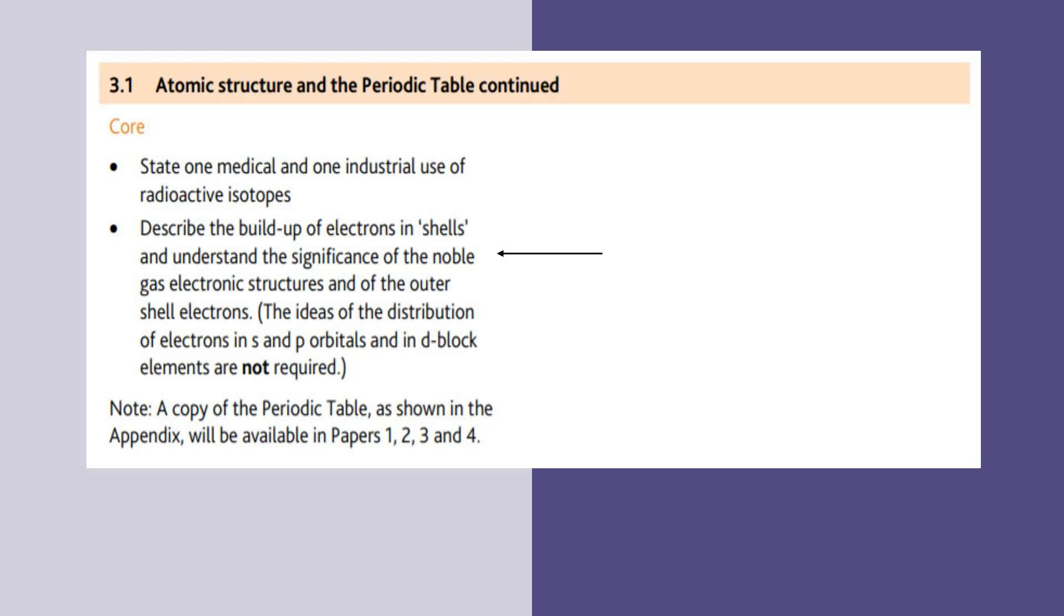We're going to discuss describing the buildup of electrons in shells and understand the significance of the noble gas electronic structures and the outer shell electrons. The ideas of the distribution of electrons in s, p orbitals, and d block elements are not required. I will be dividing the video into two parts. We will be discussing the different ways in which we can deduce the electronic configuration. In this video we'll be dealing with the first part.